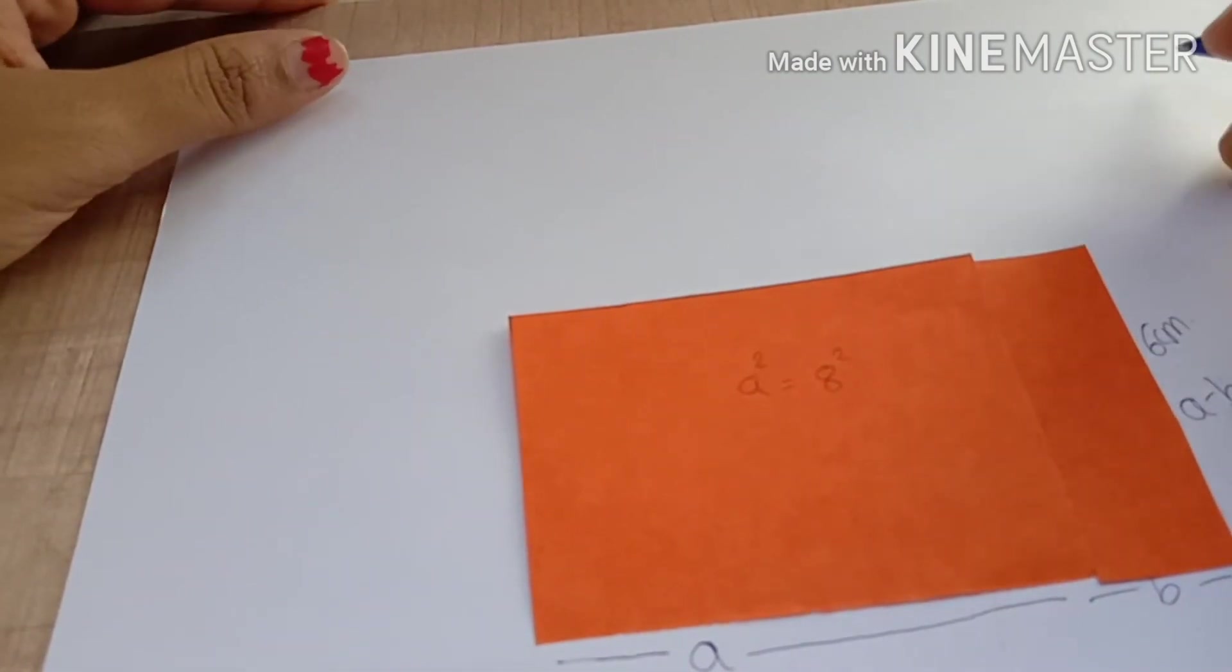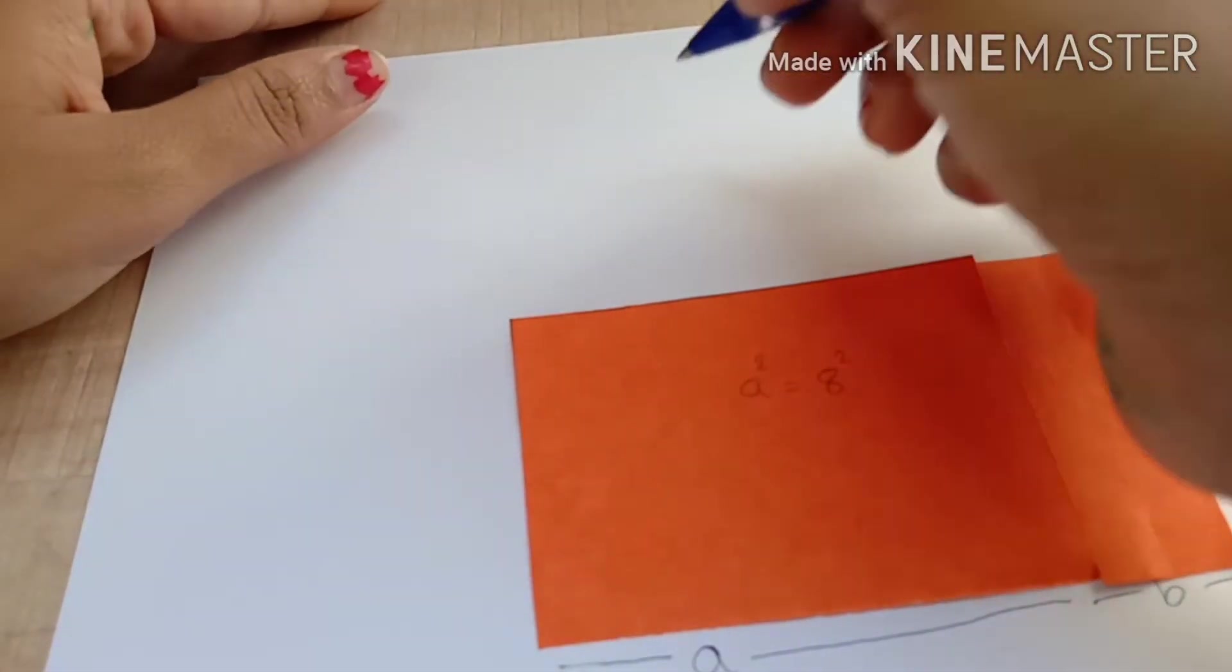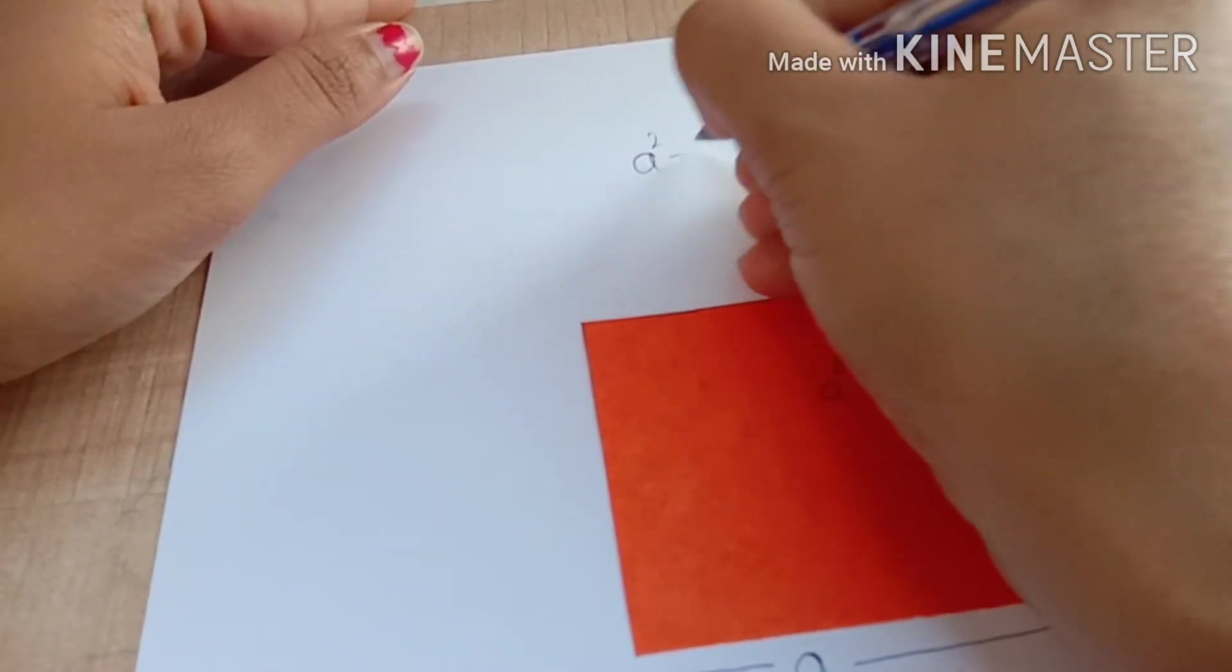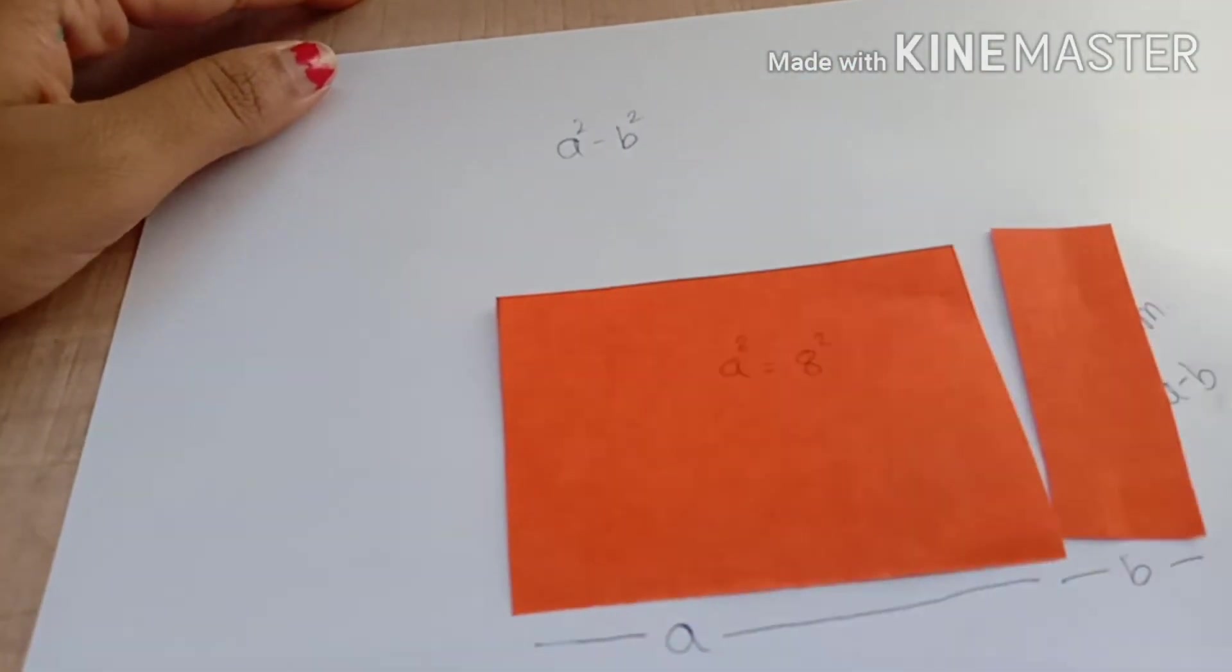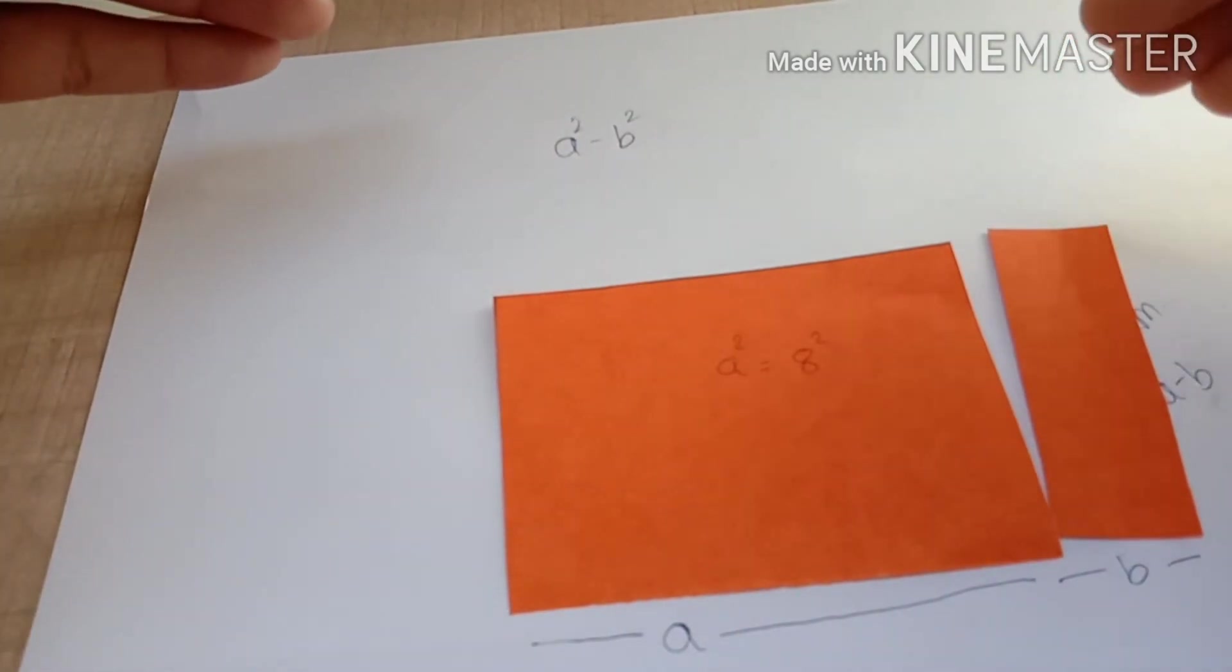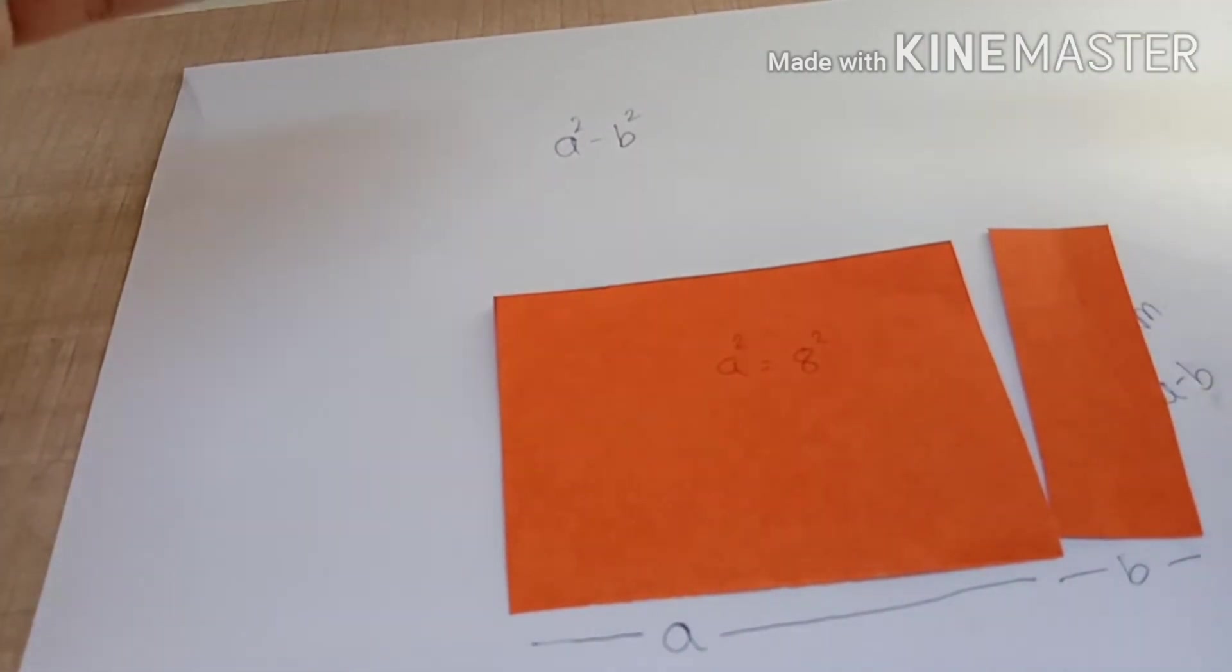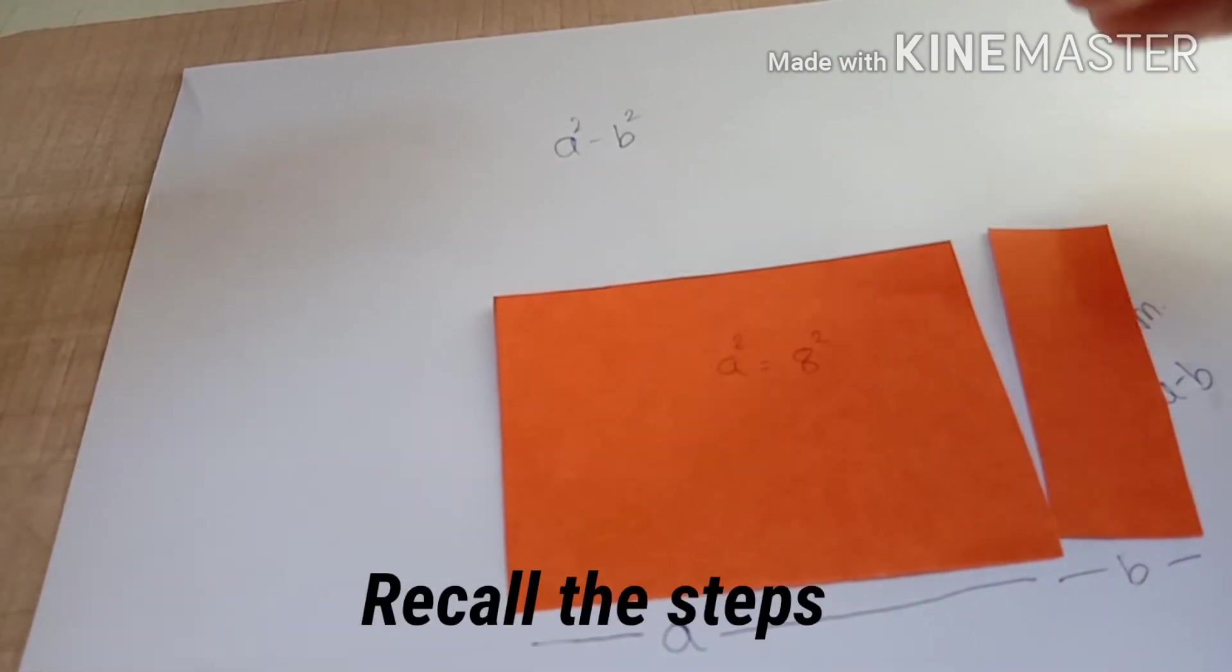Now what I did is a square minus b square, right? In the first step, I took a square sheet and I cut b square from the a square, so I was left with a rectangle in the above part.